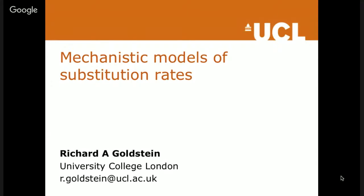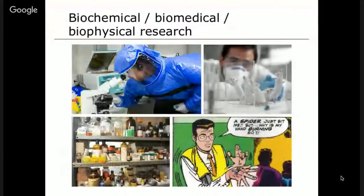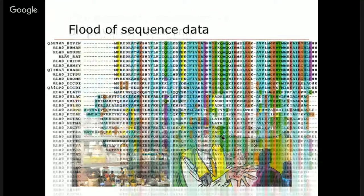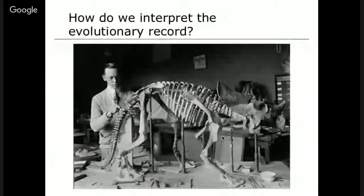I'd like to talk about some recent work that we've done in developing mechanistic models of substitution rates. The basic motivation is that there's all this biochemical, biomedical, biophysical research, but a lot of it involves dangerous conditions. So the idea is that we would be looking for a way of getting other information about proteins, and the obvious place to look is the flood of sequence data, which means that we have to develop ways for interpreting the evolutionary record encoded by all of these sequences now available to us.